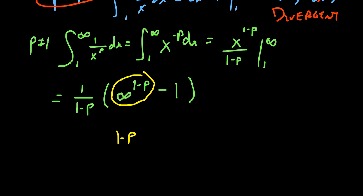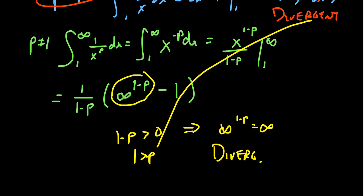If 1 minus p is greater than 0, then infinity to the 1 minus p is infinite. Since 1 minus p greater than 0 implies p less than 1, we get divergence in this situation. Combining this with the previous case where p equals 1, we conclude that when p is less than or equal to 1, we get divergence.